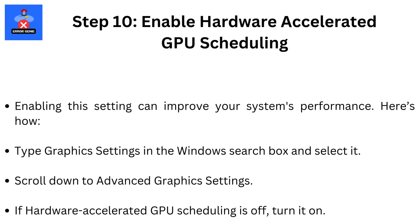Step 10: Enable Hardware Accelerated GPU Scheduling. Enabling this setting can improve your system's performance. Type Graphics Settings in the Windows search box and select it. Scroll down to Advanced Graphics Settings, and if Hardware Accelerated GPU Scheduling is off, turn it on.